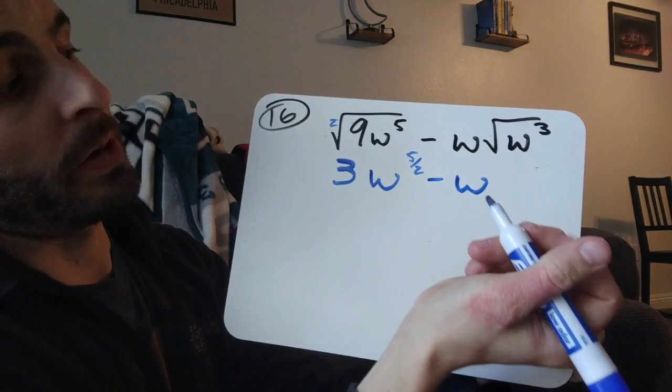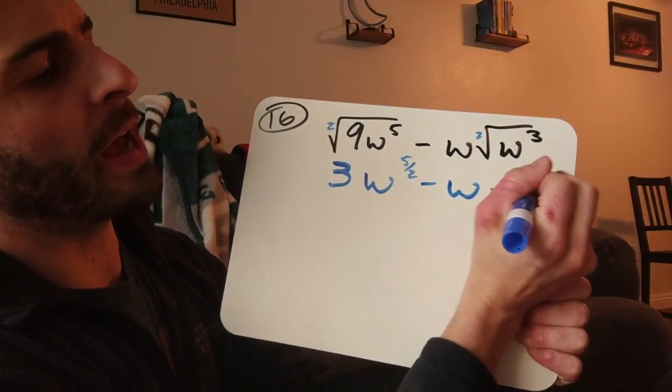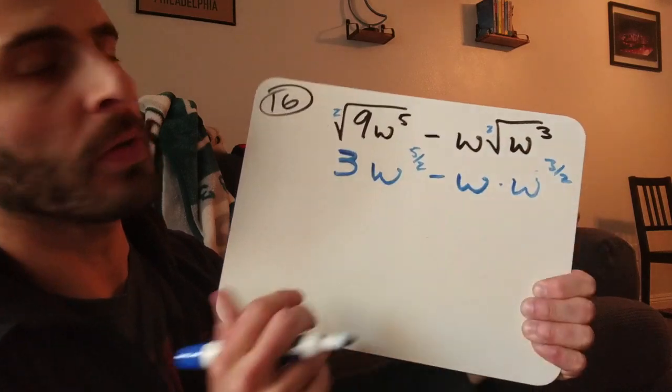Minus. Alright, there's a w, and then there's another w cubed, the square root of that though, so I'm going to turn that into w to the 3 over 2.